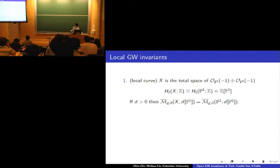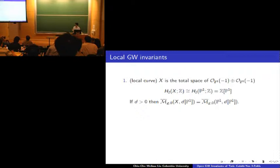They have different virtual tangent bundles, though. The virtual dimension of the left-hand side is zero, but the virtual dimension of the right-hand side is non-zero. But you know it's compact, so for this non-compact Calabi-Yau threefold you can still define Gromov-Witten invariants for any genus and any non-zero degree.